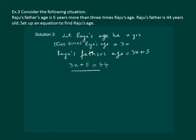Therefore, this is an equation in X, and here X denotes Raju's age.